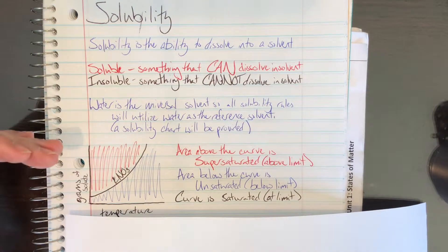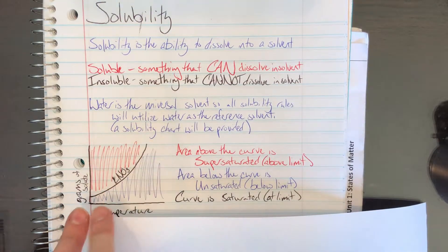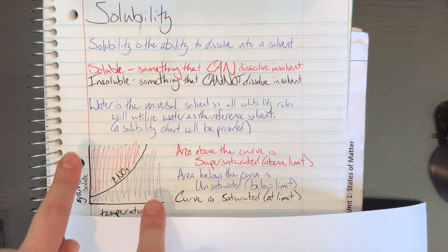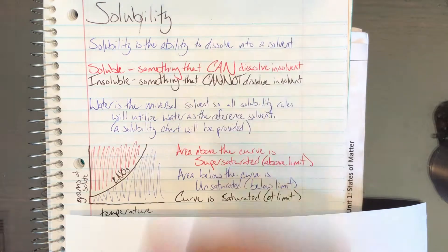As I go up the y-axis, I'm increasing the amount of potassium nitrate being dissolved. On the bottom, the x-axis shows temperature. As I go from left to right, I'm increasing temperature. You can see with the curve that if I increase temperature, I increase solubility. As I heat up my solution, I'm able to get more potassium nitrate to dissolve into it.